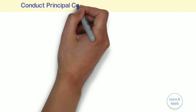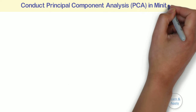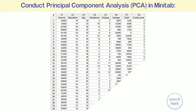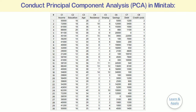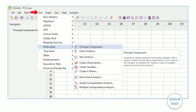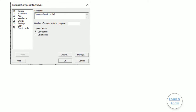Conduct a principal component analysis in Minitab. To conduct a principal component analysis in Minitab, please follow the steps. Step 1: Enter or copy the data to the Minitab worksheet with the data for one variable in one column, as shown in the picture. Step 2: Select Stat, Multivariate, and then Principal Components. Step 3: In Variables, enter C1 to C8.